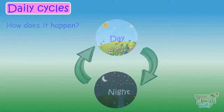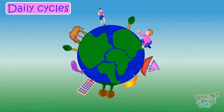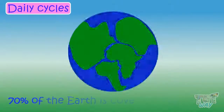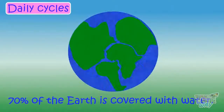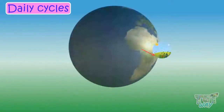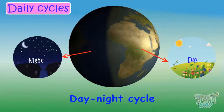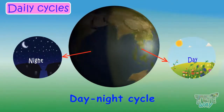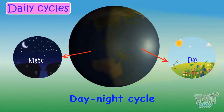Kids, we live on a planet which is named as Earth, and it's called a blue planet, because 70% of the Earth is covered with water. Have you ever wondered how do we experience day after night, then again day and night? So let's see how does it all happen.